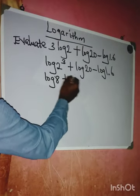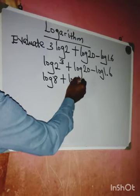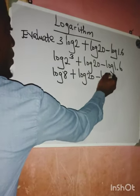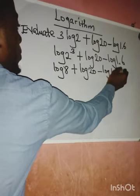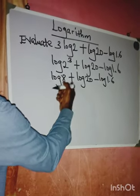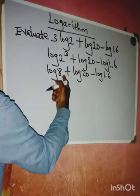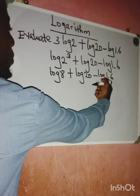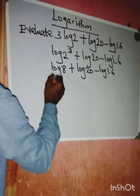Then plus log 20 minus log 1.6. Now because of this addition, we are going to multiply, and then divide the answer by 1.6. So we are going to have logarithm of 8...